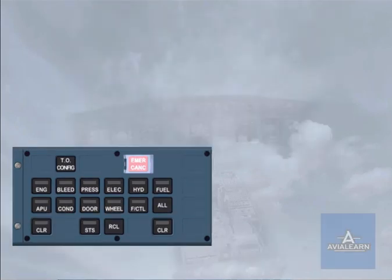We will now briefly look at the use of the emergency cancel push button. It is normally used to cancel an intermittent nuisance message. It may be used, if necessary, to cancel most oral warnings. Let's look at an example of an intermittent nuisance message.